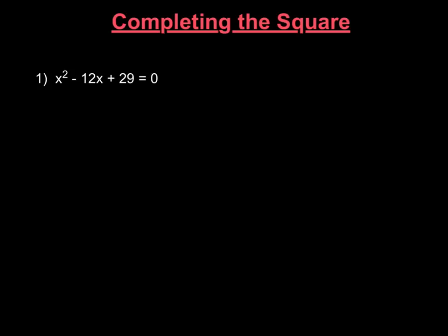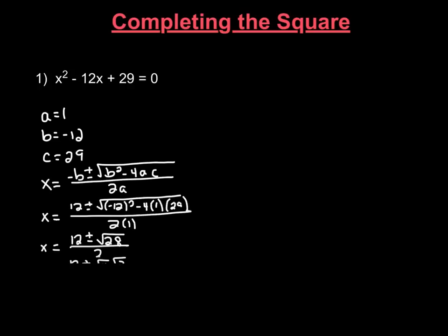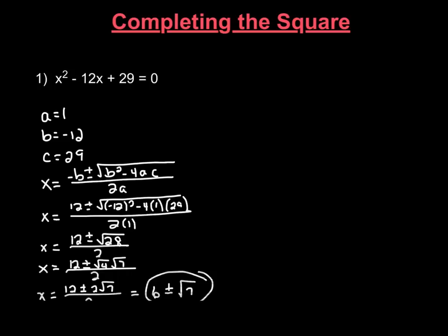Yesterday we learned about a method called the quadratic formula, and that method enabled us to solve an equation like this for x. So right here you can see if we were to do it through the quadratic formula, plugging in our a, b, and c, once you simplify everything, in the end we wind up with 6 plus and minus radical 7.